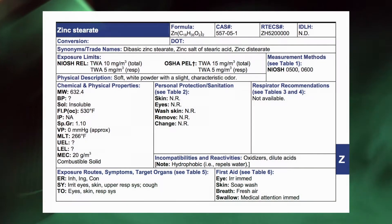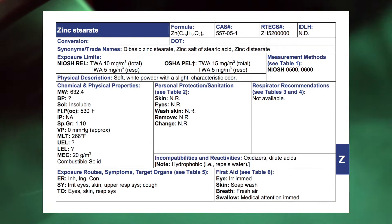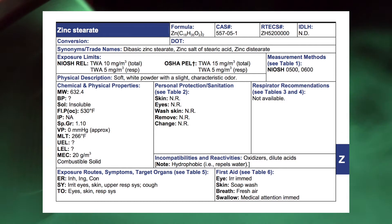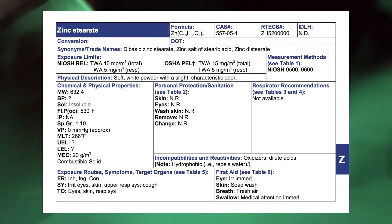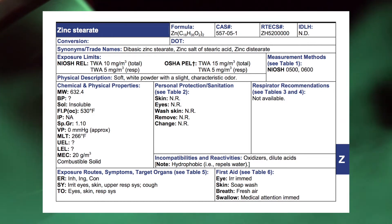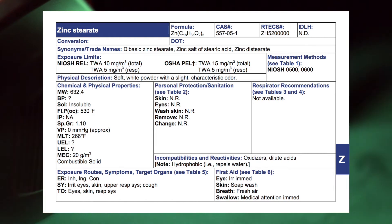So what makes it blow up? Look at the formula. You've got to have fuel, oxidizer, and heat. Where's the fuel? Carbon and hydrogen. Where's the oxidizer? Right in the formula — the O in there. So what do you need for it to blow up? The right concentration and an ignition source.